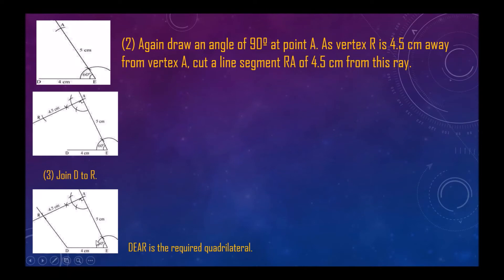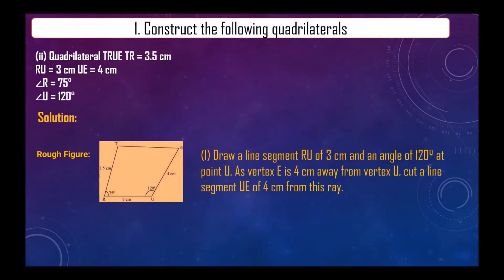So we will join D to R. So this is the required quadrilateral DEAR. Second quadrilateral TRUE, in that TR is given 3.5 centimeter, RU 3 centimeter, UE 4 centimeter, angle R equals to 75 degree, angle U equals to 120 degree.